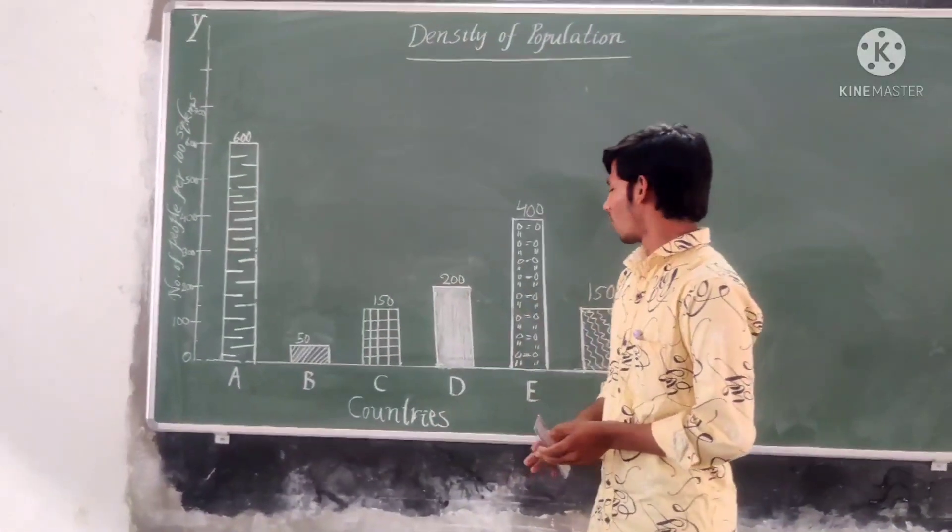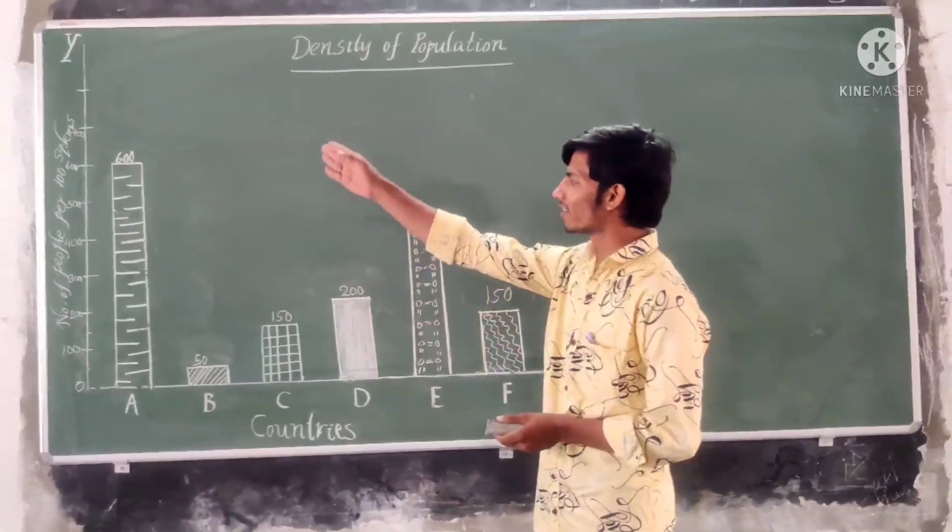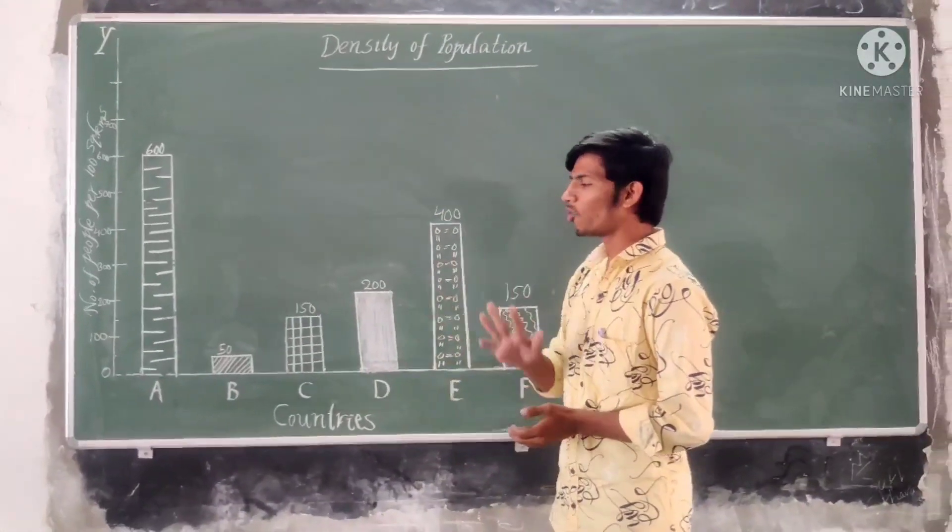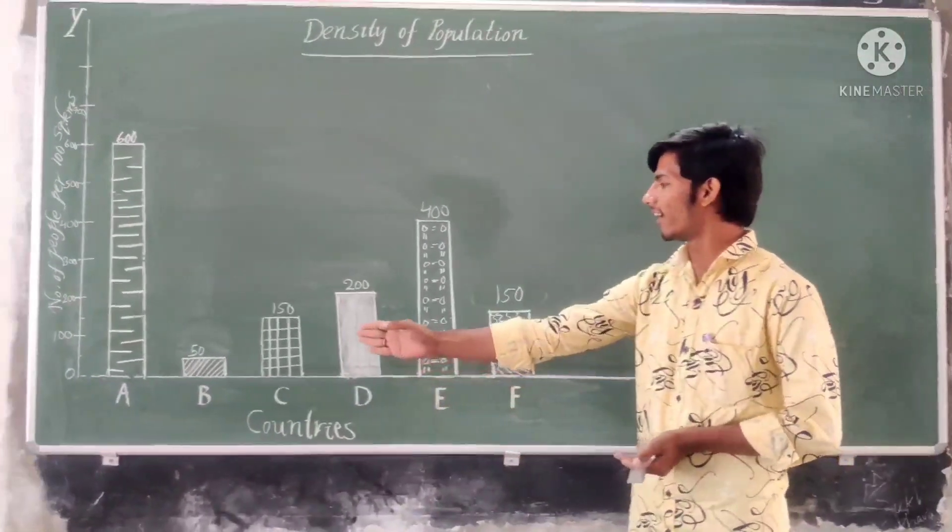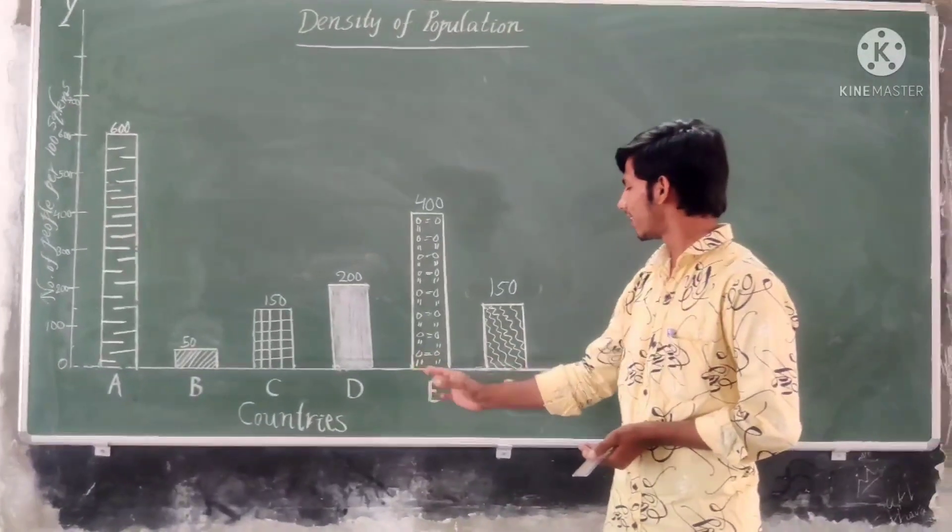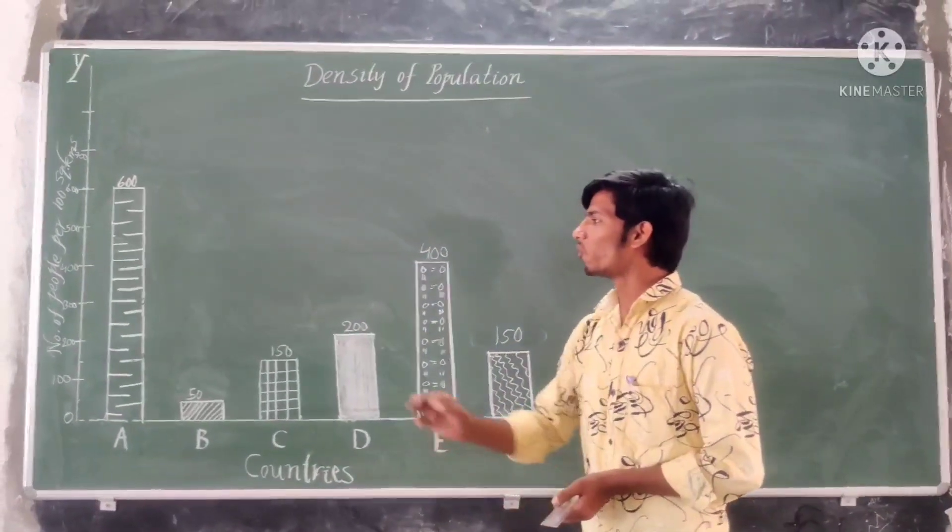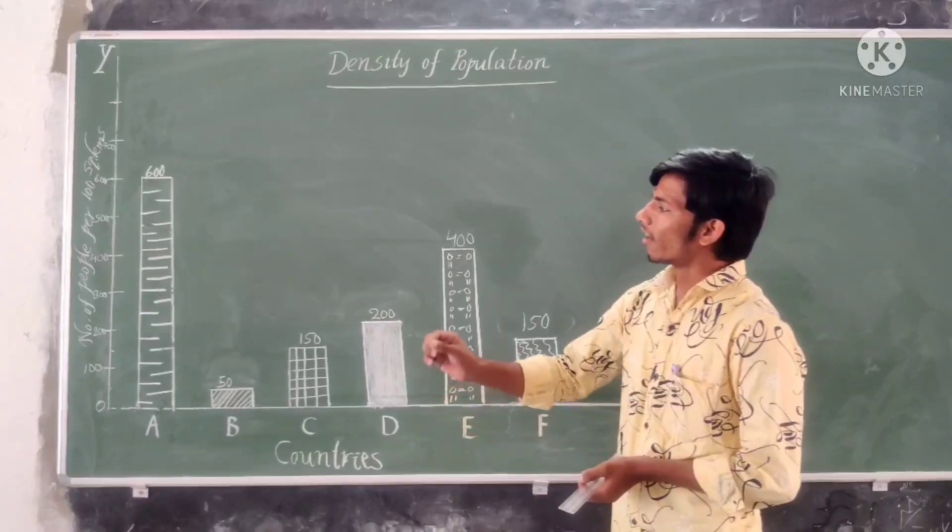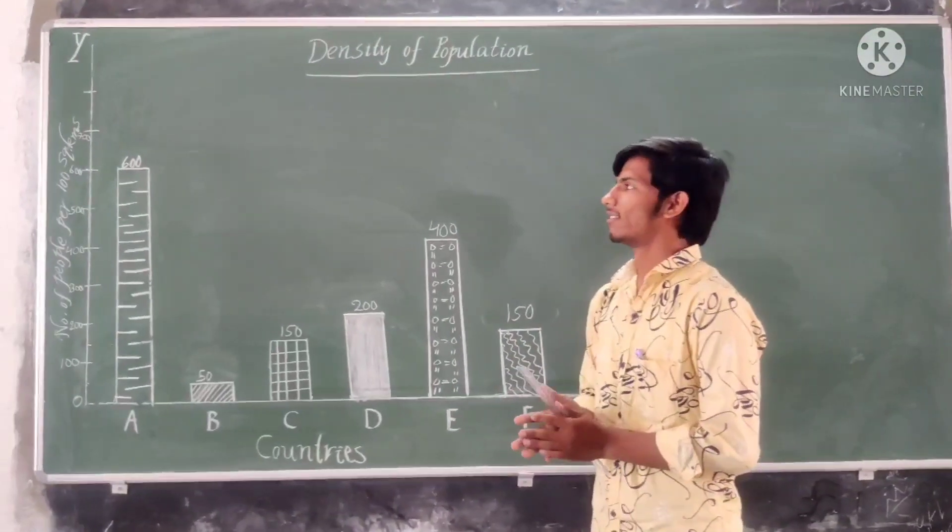Here in the graph, we find x-axis horizontally and y-axis vertically. What do we find on x-axis? We observe some names of countries like A, B, C, D, E and F. What do we find on y-axis? We observe the number of people per 100 square kilometers.